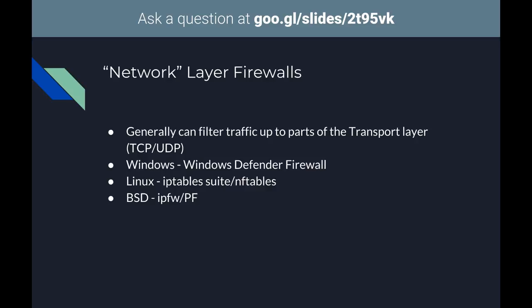Network layer firewalls actually generally work up to the transport layer. When inspecting traffic you're not differentiating between HTTP, DNS, or other application traffic — you just care about what port it's on and whether it's TCP or UDP. That's why the name is in quotes, because it's actually operating up to the transport layer. On Windows this will likely be Windows Defender Firewall, recently rebranded from Windows Firewall in Windows 10.